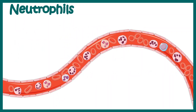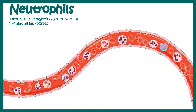Neutrophils are the most abundant leukocytes and they constitute the majority of the leukocyte population, around 50 to 70% of the total circulating leukocytes. Other than neutrophils, the basophils and eosinophils are kind of the minority.